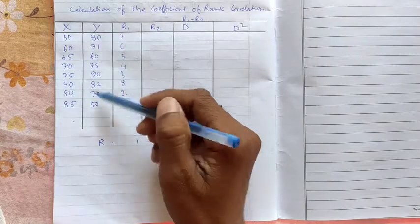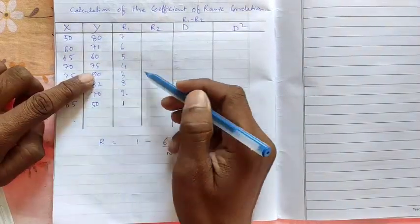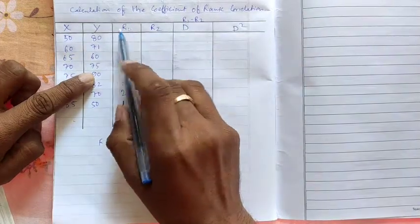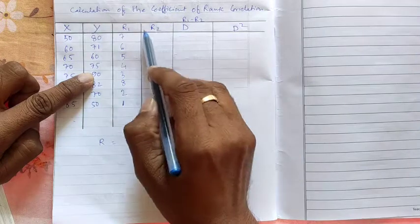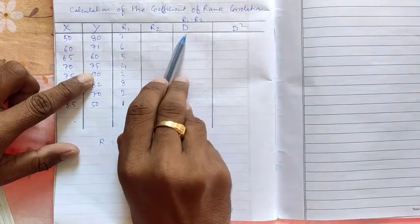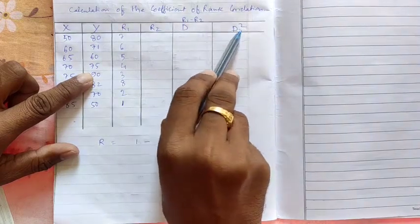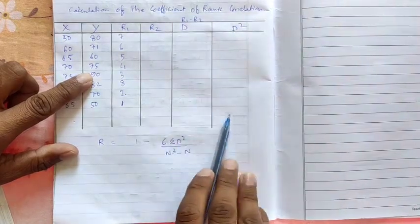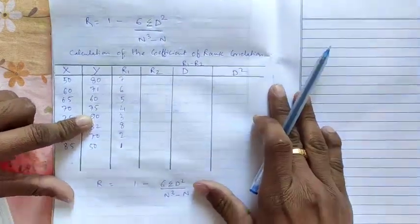This way we will give rank to y variables also. So the first rank goes to 90. So here r2. So rank of x we denote as r1 and rank of y we denote as r2. So when we get r1 and r2 we can easily find d. So d means r1 minus r2. So if we get d we will find d square and d square summation that is summation d square. We can easily put in this formula.